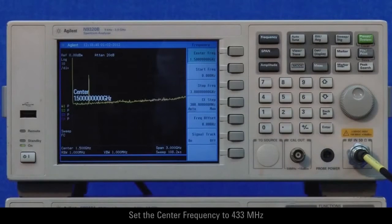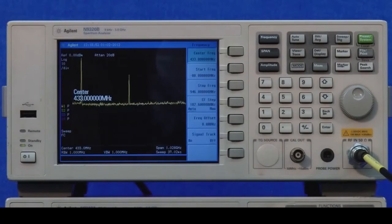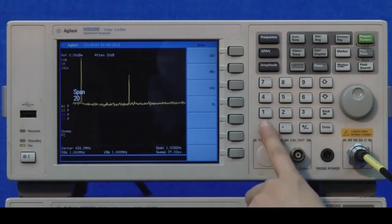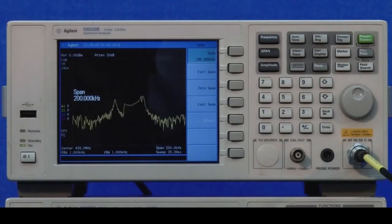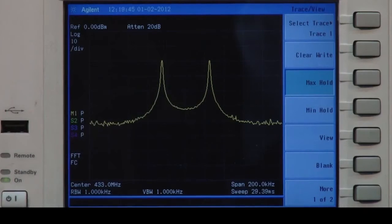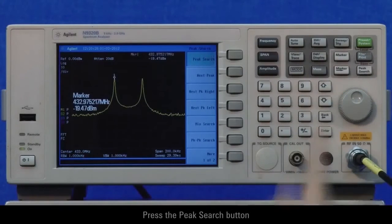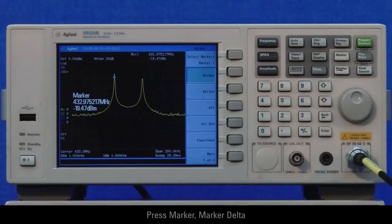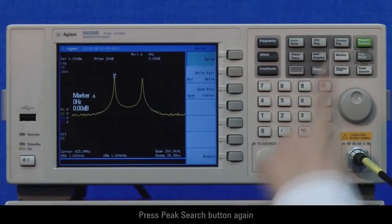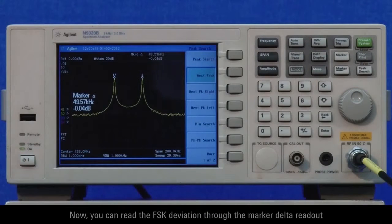Maximum hold is usually used to measure the peak to peak FSK deviation but it can be time consuming. To do this, set the center frequency to 433 megahertz, set the span to 200 kilohertz, enable maximum hold status and wait till the trace stabilizes. In order to read out the FSK deviation you will need to use markers. Press the peak search button, press the marker, marker delta, press peak search button again, then press next peak. Now you can read the FSK deviation through the marker delta readout.